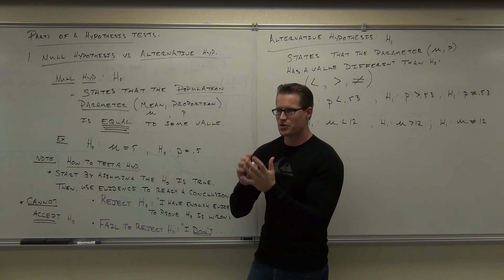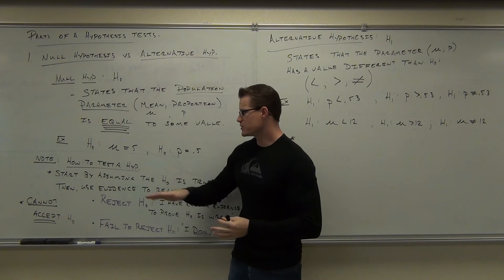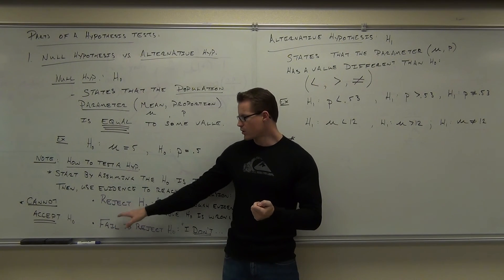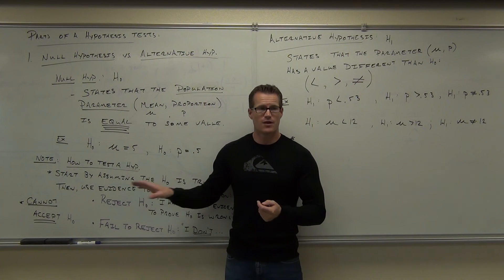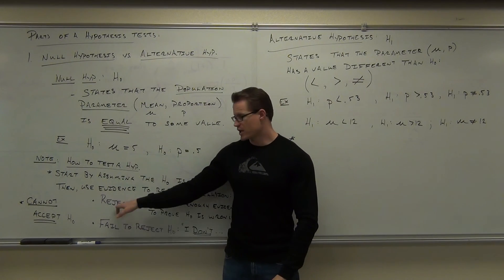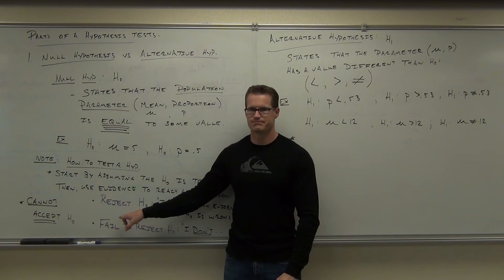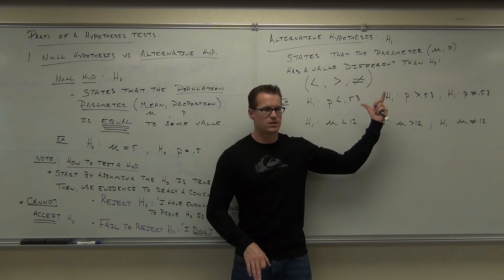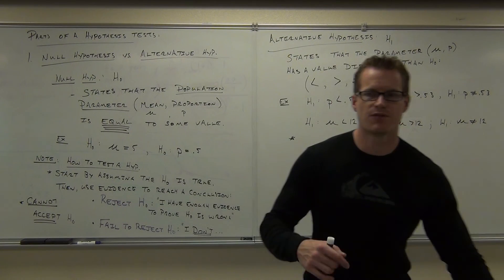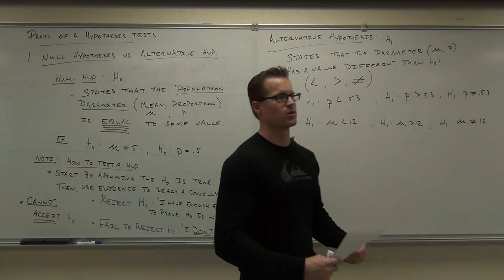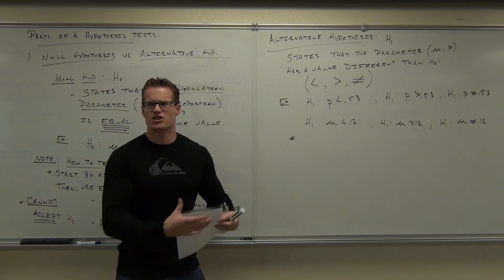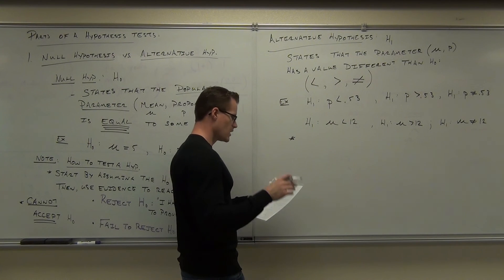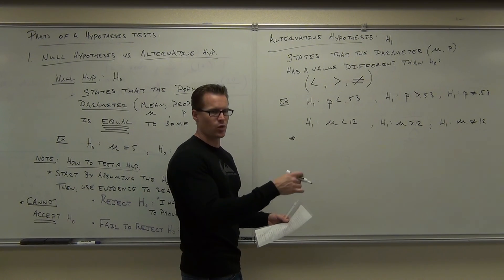If you want to prove a statement true — prove it right — can you state it as the null? All you can do with the null is prove it wrong or fail to prove it wrong. You can't accept it, which means you can't prove it right. So if you want to prove a statement right, you must state it as the alternative hypothesis, because that's the only one you can accept. And the only way you can accept it is by proving the null wrong. If you want to support a claim, you must state it as H sub one, not H sub zero.